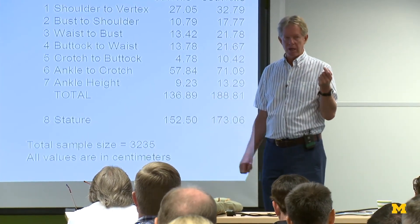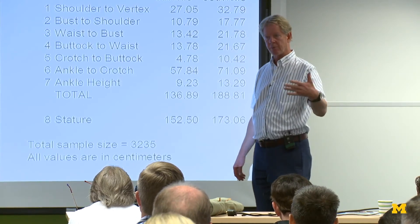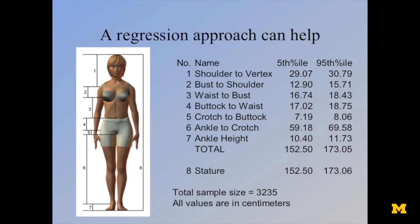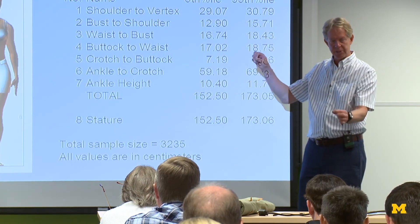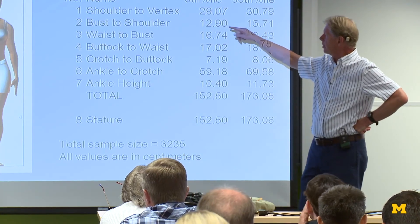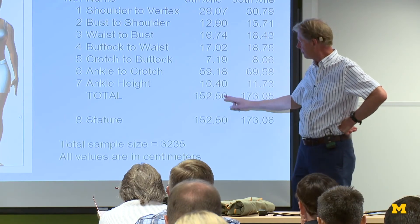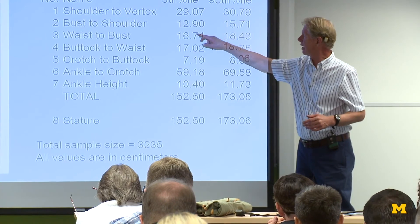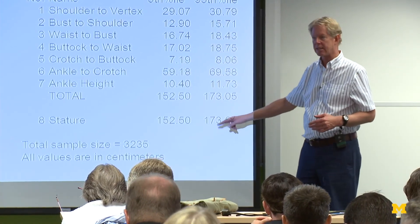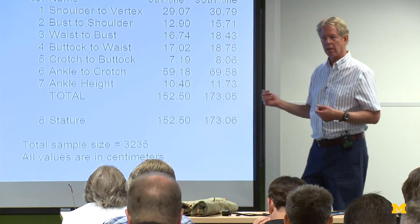Whenever you get a requirement like that, you need to go back to whoever wrote it and ask: fifth percentile what? Fifth percentile stature? Fifth percentile weight? Fifth percentile hand length? Depending on your application, you can use regression equations to help solve that problem. If you take your fifth percentile stature and predict shoulder-to-top-of-head and bust-to-shoulder from it using regression — like the cervicale height and stature relationship — then add them up, they do add up consistently. Any one of those values is not the fifth percentile value independently, but you have a fifth percentile stature with proportional parts that add up to it.